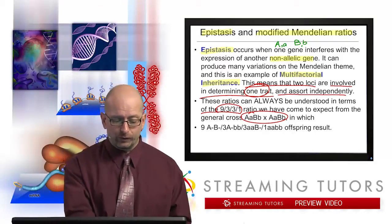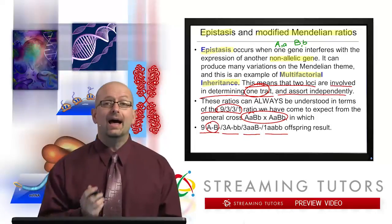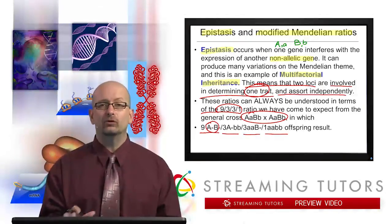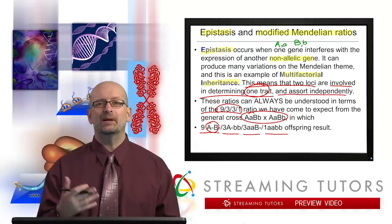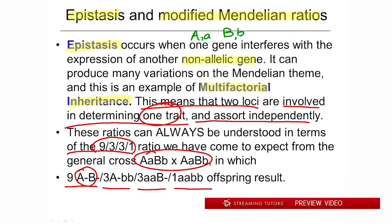In a 9 to 3 to 3 to 1 ratio, with complete normal dominance: the 9 are individuals with at least one big A and one big B, and phenotypically they look dominant for both traits. One of the threes has one big A and two little Bs; one of the threes has two little As and one big B; and the 1 is always homozygous recessive at both loci. Keep that general form in your mind.